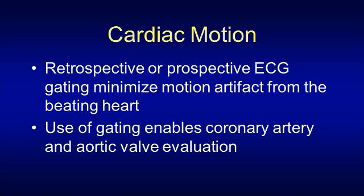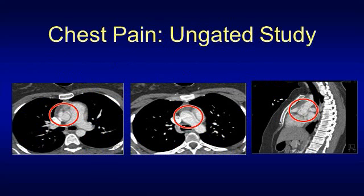Particularly in coronary artery imaging and aortic valve evaluation, we have to image with gating so that we maximize our temporal resolution and decrease the motion artifacts that limit image quality. Let's look at this ungated study on a young woman who came in with chest pain and has what looks like a small dissection in the ascending thoracic aorta.